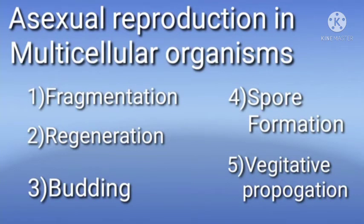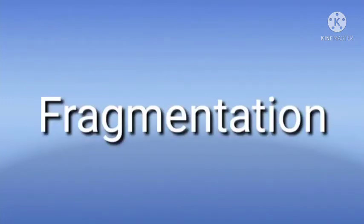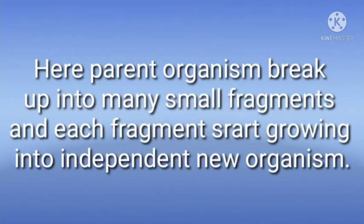Asexual reproduction in multicellular organisms are further subdivided into five parts: fragmentation, regeneration, budding, spore formation, and vegetative propagation. First part, fragmentation. In this part, we are going to see parent organism breakdown into small fragments, and each fragment starts growing into individual new organism.